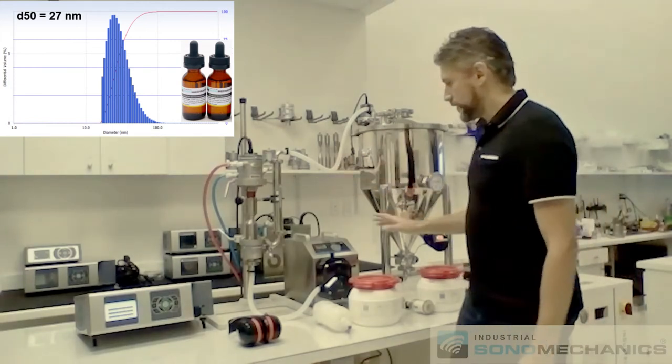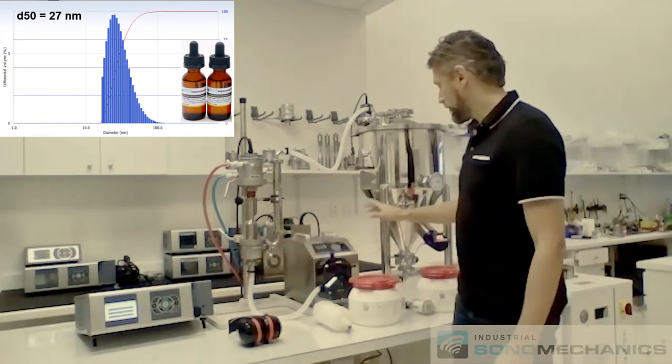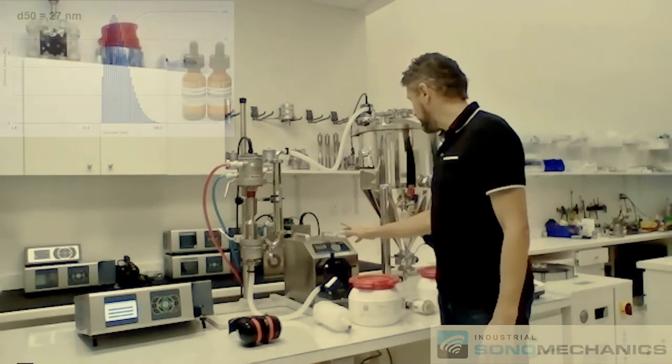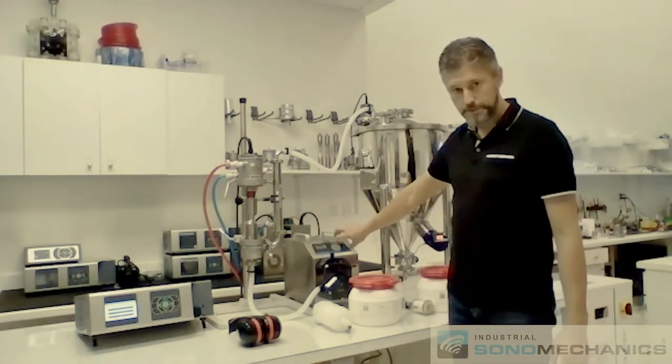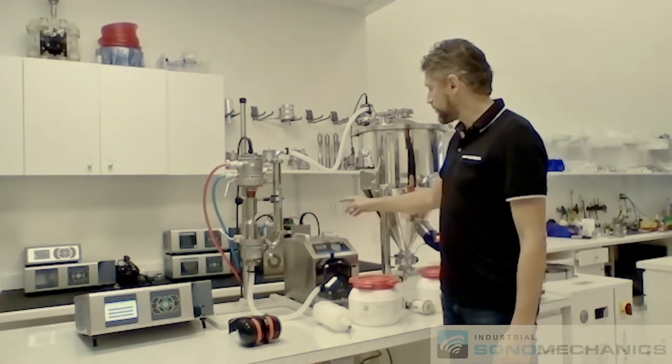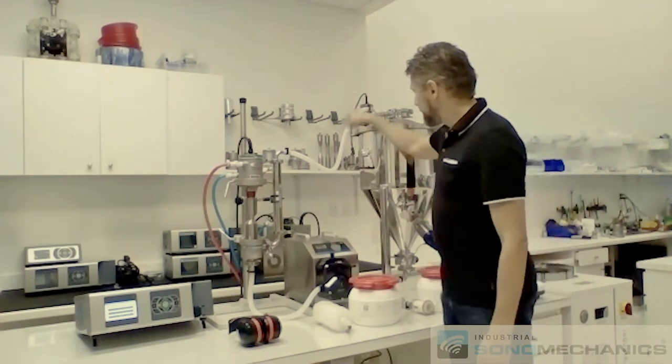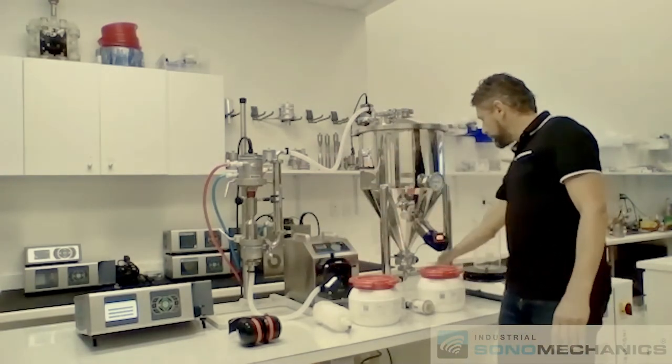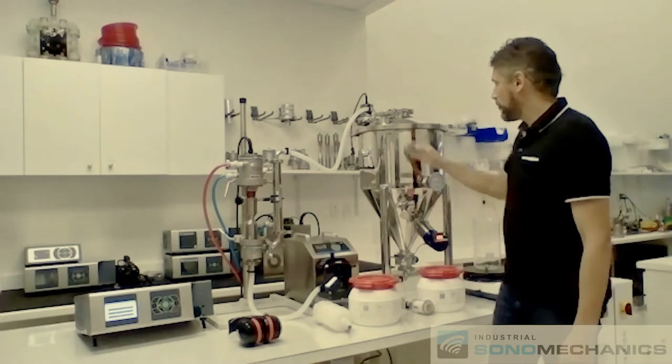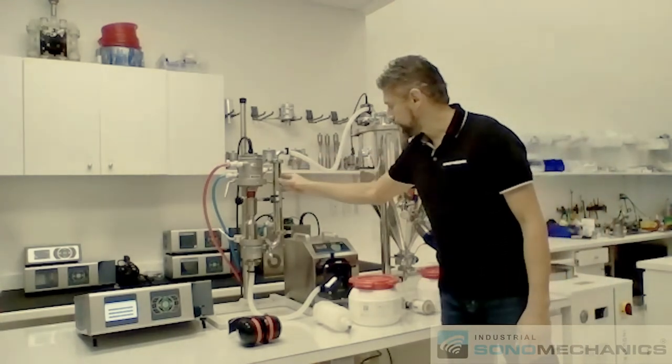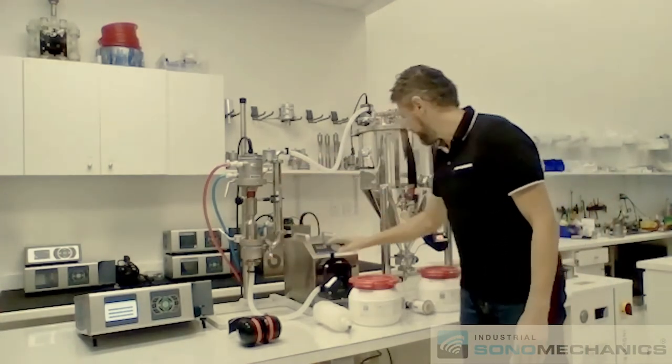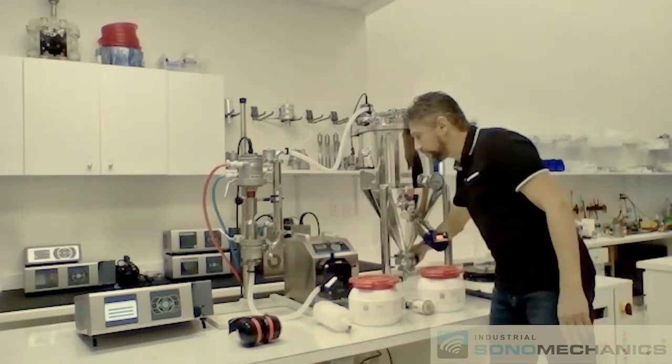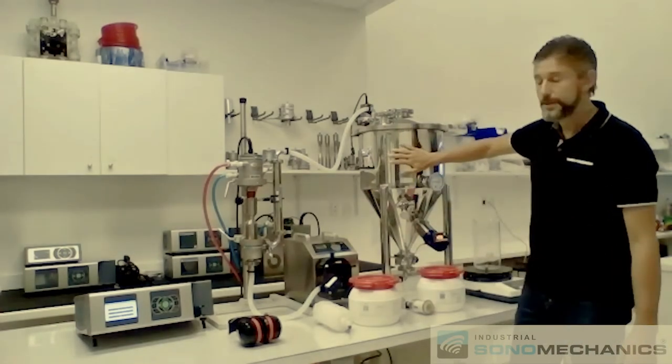Once the process is done, you stop the ultrasound, you stop the pump, reverse the flow direction of the pump, start it up again, that will collect all the liquid back into the tank. Once all the lines and the heat exchanger and reactor chamber everything's purged, you can close this valve and now you have all of your nanoemulsion here.